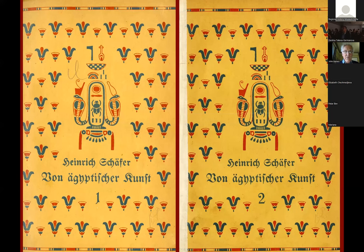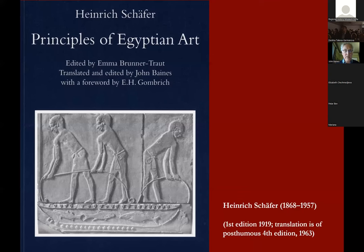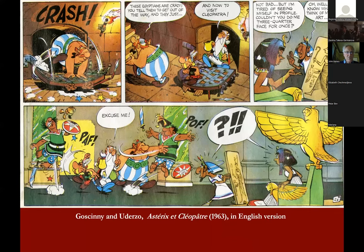The fundamental work on Egyptian representation is Heinrich Schaefer's work, first published in 1919. You can tell that Schaefer did not take things literally from the cover he chose. Early in my career, I translated Schaefer's book into English — that's the cover of the printing from about 2002, very heavily revised from what Schaefer published in 1919. The last German edition was 1963. But we can also go to other traditions to think about how they help us understand ancient Egyptian representation.